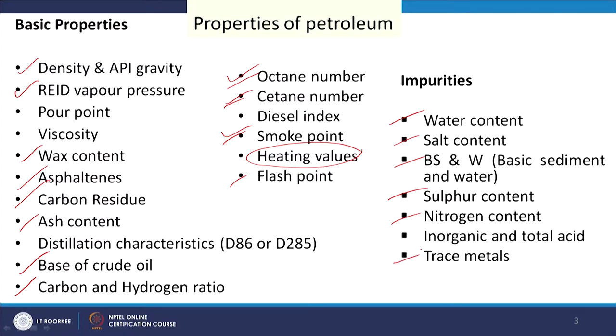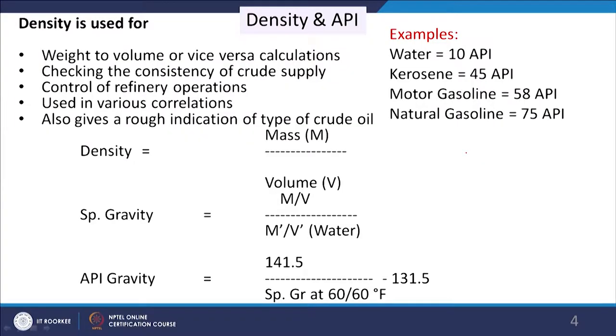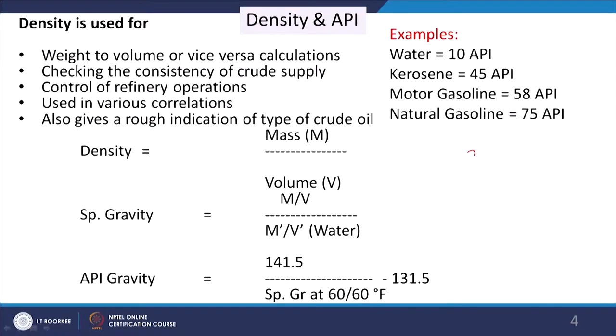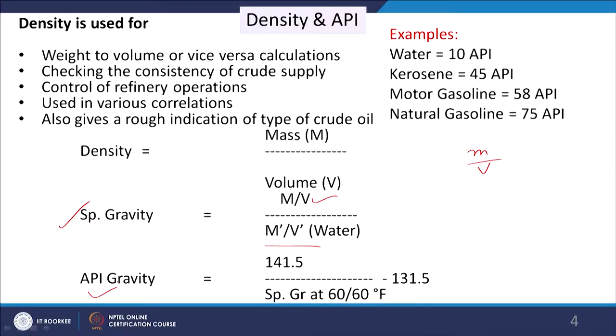These are the different properties of the crude oil and we will discuss the importance of these and how to measure these properties. First, we will see density and degree API or API gravity. As you know, density is mass divided by volume of any substance. Specific gravity is also used — mass per volume divided by reference mass per volume — that means with respect to water. So it is the density of any material divided by the density of water at 4°C — that is specific gravity. Similarly, API gravity has been defined by the American Petroleum Institute as: 141.5 divided by specific gravity at 60°F minus 131.5.